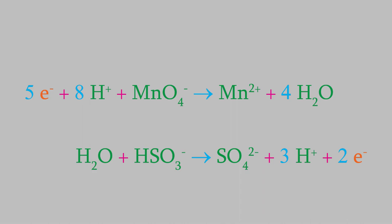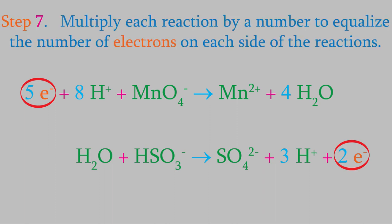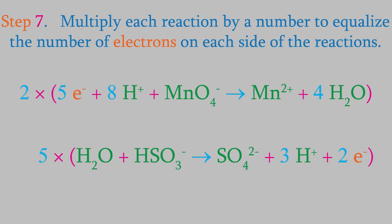We're almost done — there's just one more step. We're ready to recombine the two reactions to get our overall reaction back, but there's one thing we need to check first. It's not possible to have free electrons floating around in a reaction. Looking at the two half-reactions, we have five electrons on the left side of the reduction reaction and two electrons on the right side of the oxidation reaction. If we added the reactions together now, two electrons would cancel out but three would be left on the left side. We need to make sure all the electrons cancel out, which we can do by multiplying each reaction by a number so that the number of electrons is the same in both. In this example, we'll multiply the reduction reaction by two and the oxidation reaction by five, giving us ten electrons in each reaction.